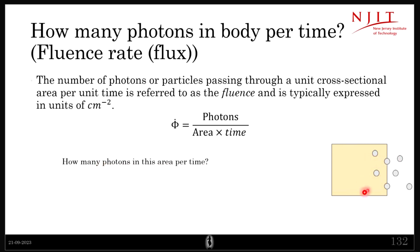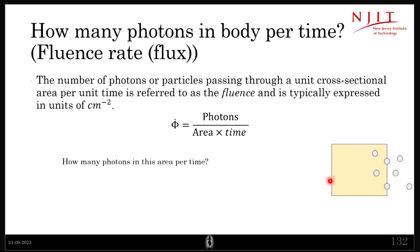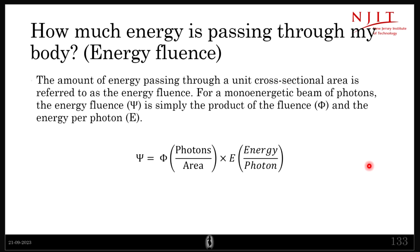Then, how much energy is passing through my body? This is talking about just photons, but we are interested in energy. So you multiply that with the energy of every photon - E is the energy per photon. This is more interesting. That is what is called energy fluence, and it is given by this formula.